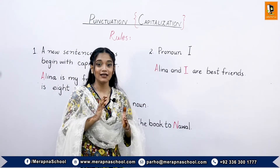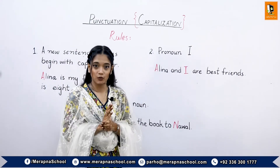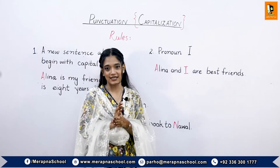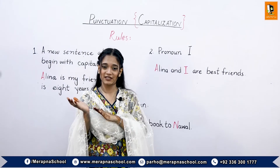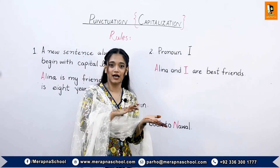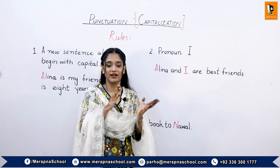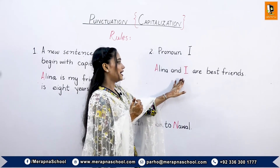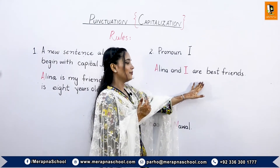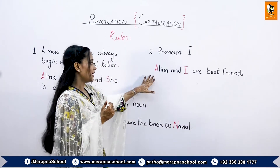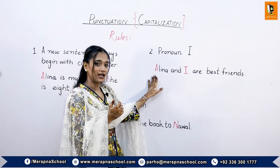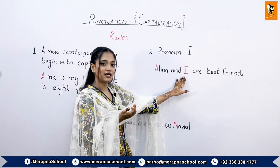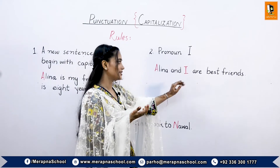The second rule is that the pronoun 'I' is always capitalized wherever it appears in the sentence — whether it comes at the start or in the center. For example, in the sentence 'Alina and I are best friends,' the first letter A is capitalized, and then the pronoun I, which comes in the center of the sentence, is also capitalized.